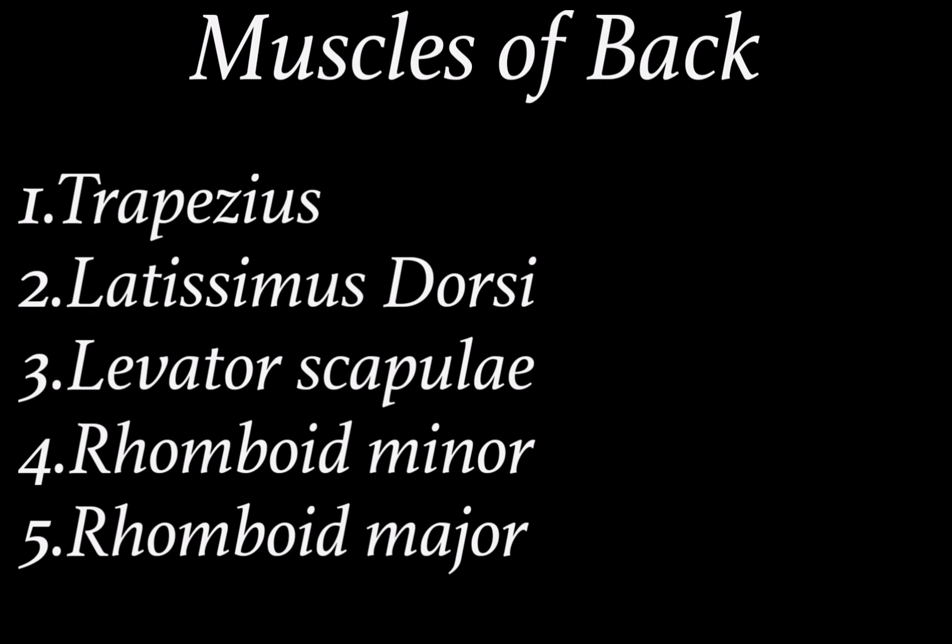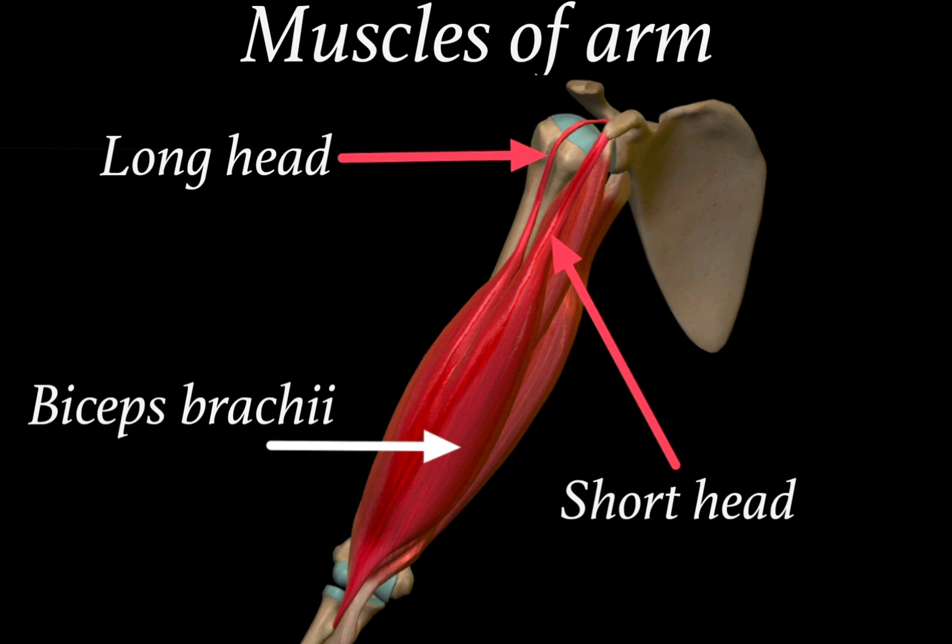There are some muscles of the back which are related to the upper limb, helping to connect the upper limb to the vertebral column. The first is the trapezius muscle. When we remove trapezius we can clearly view latissimus dorsi, and after removing latissimus dorsi we find levator scapulae, which is related to the scapula. We also find rhomboid minor and rhomboid major muscle.